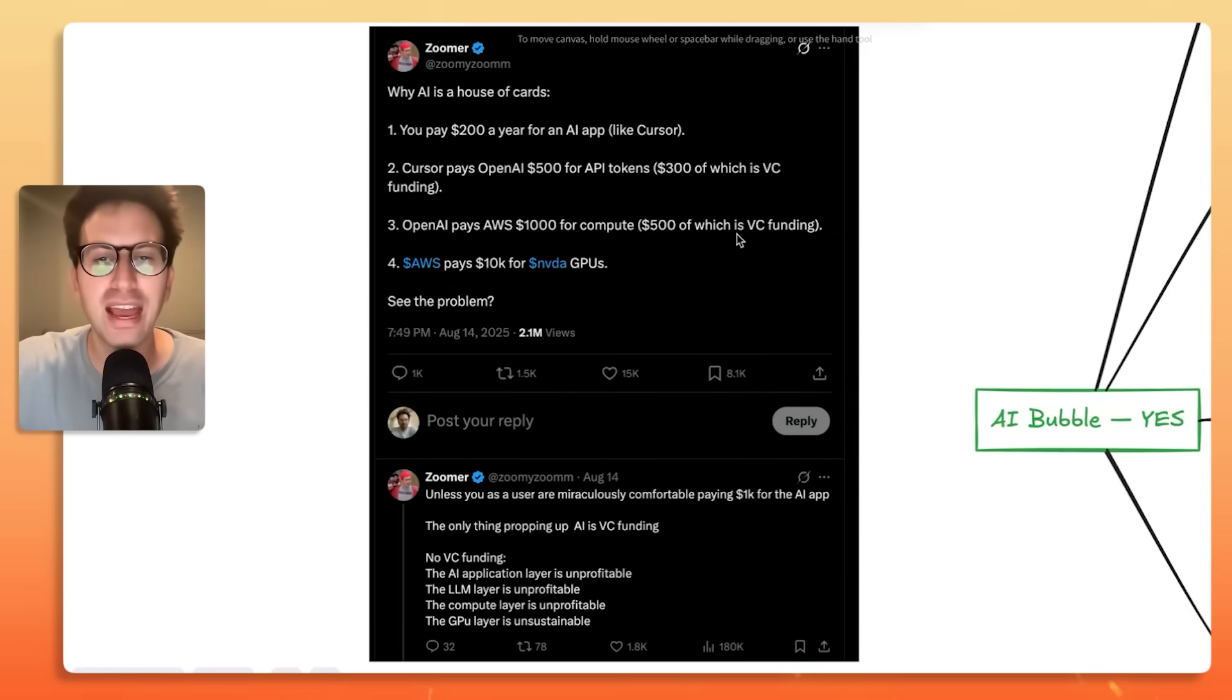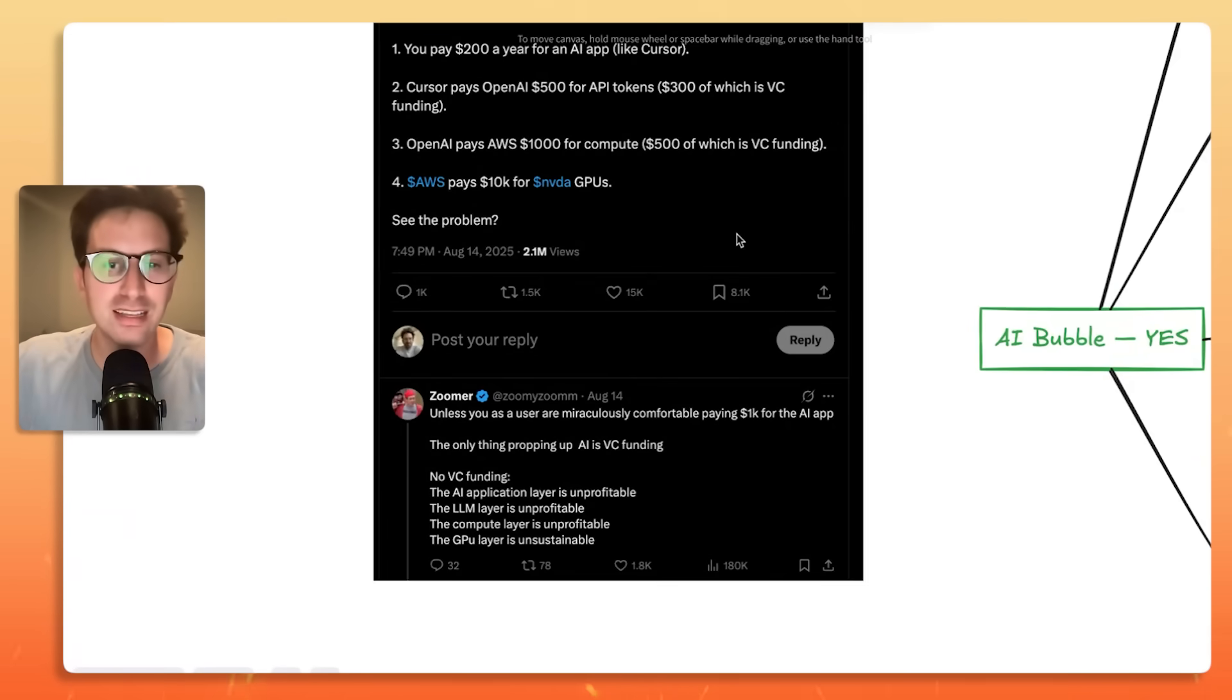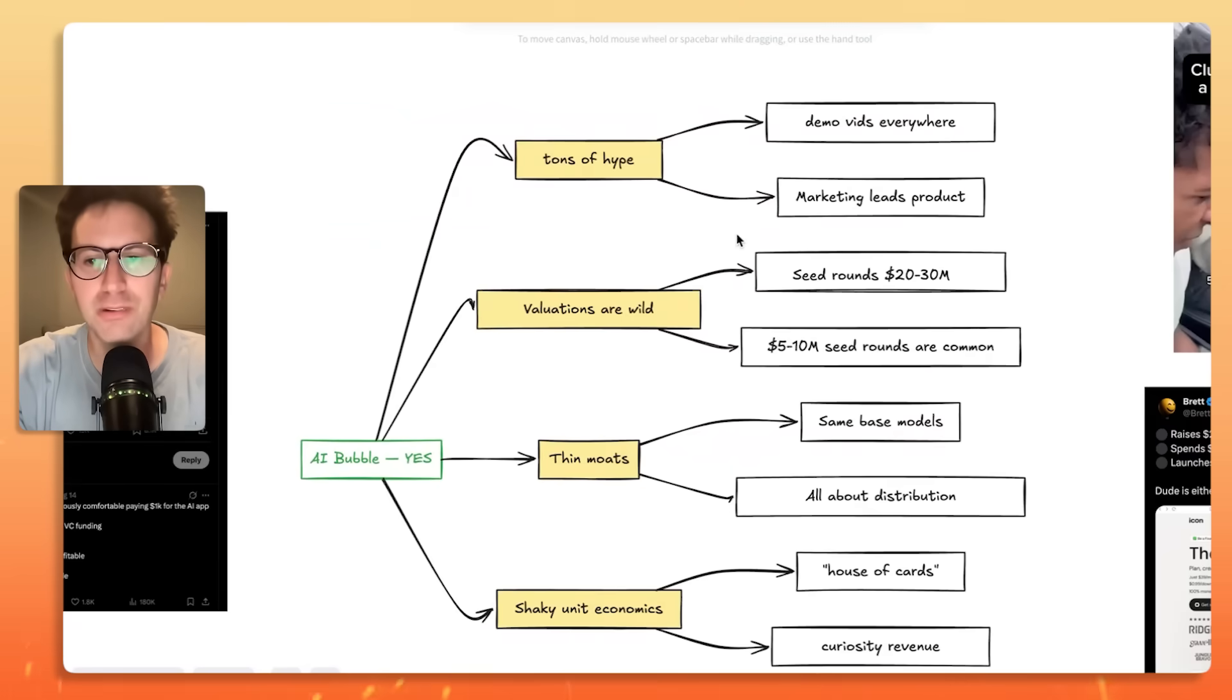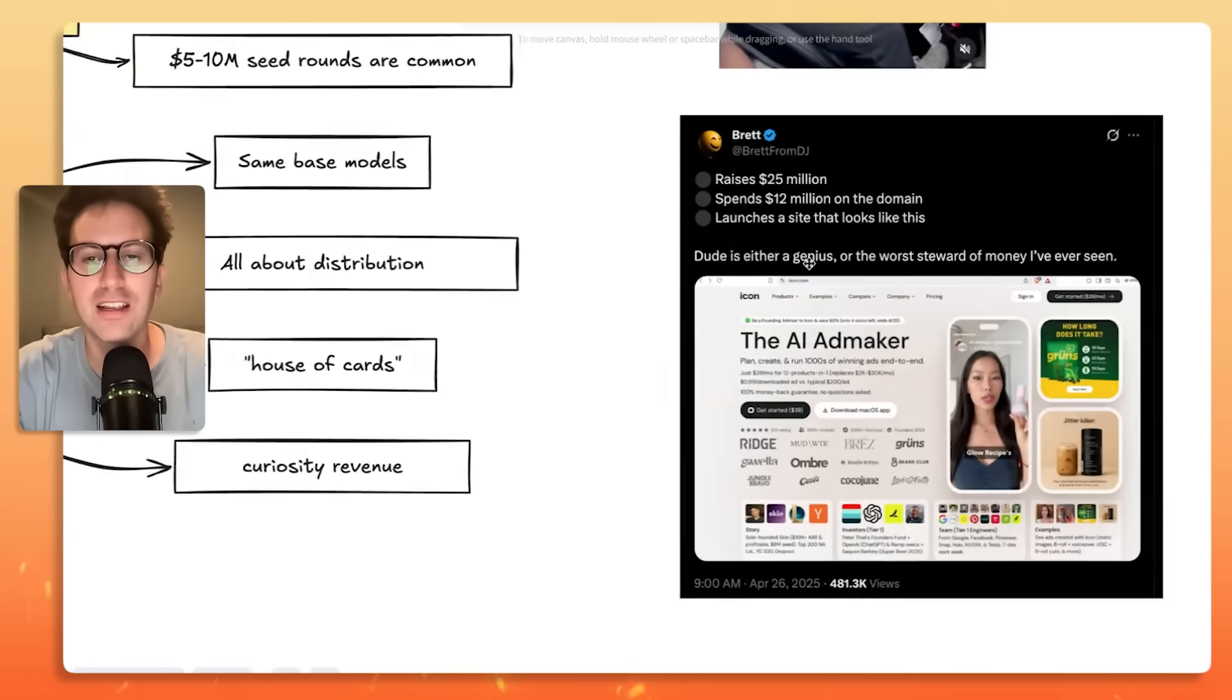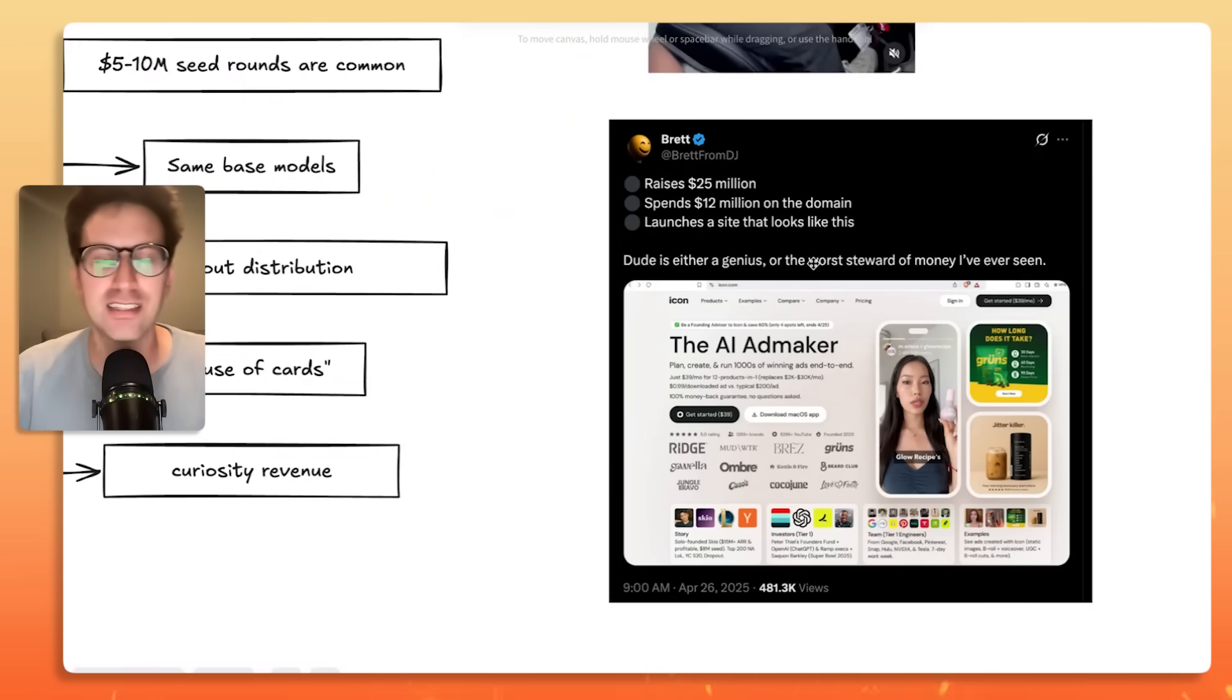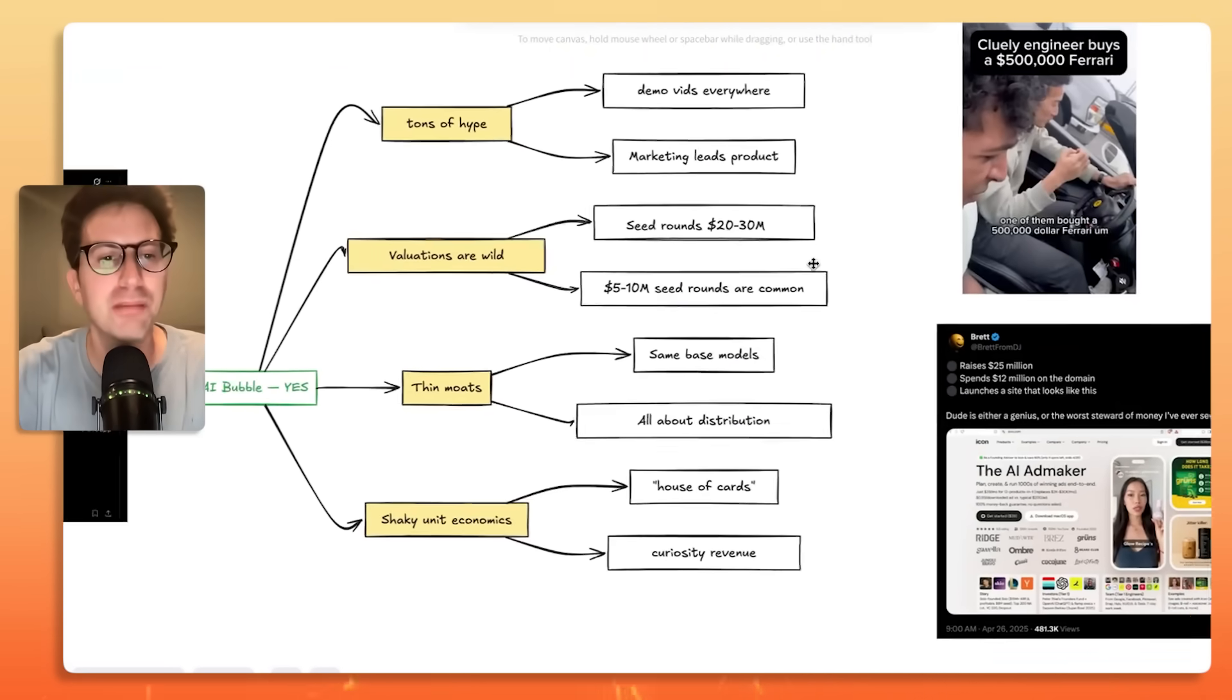Number three, OpenAI pays AWS $1,000 for compute, $500 of which is VC funding. Number four, AWS pays $10,000 for NVIDIA GPUs. Do you see the problem? Unless you as a user are miraculously comfortable paying $1,000 for an AI app, the only thing propping up AI is VC funding. No VC funding, the AI application layer is unprofitable, the LLM layer is unprofitable, the compute layer is unprofitable, and the GPU layer is unsustainable.